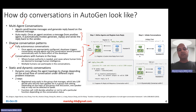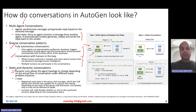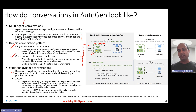Conversations could be static or dynamic. Static conversations are ones where the topology of agents is fixed. Dynamic conversations mean that the agent topology changes depending on the actual flow of conversation under different input problem instances. There are two ways to implement dynamic conversation. One is by registering auto-reply — in a group chat manager setting, it lets the LLM decide who will be the next speaker in a group.